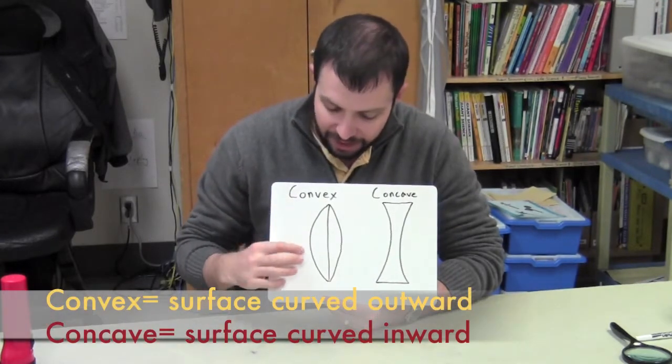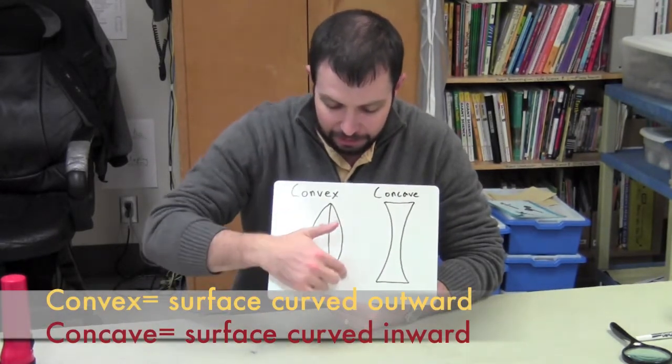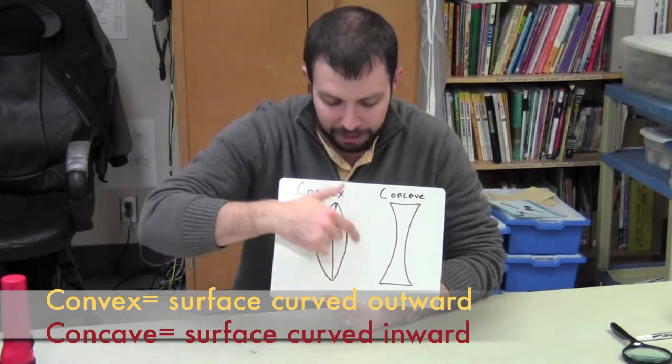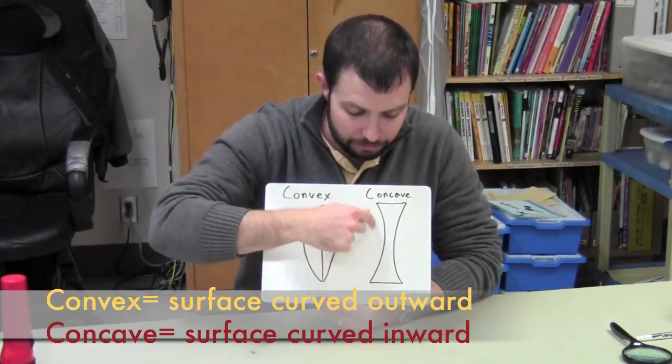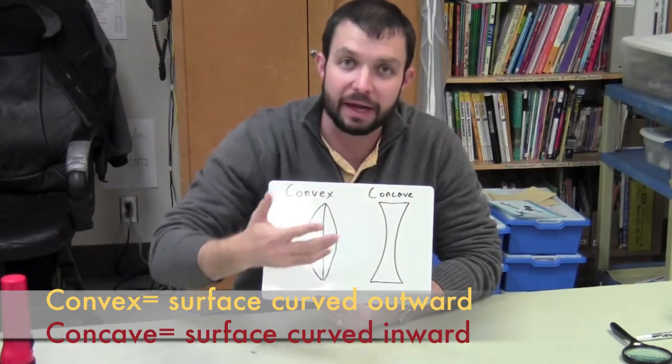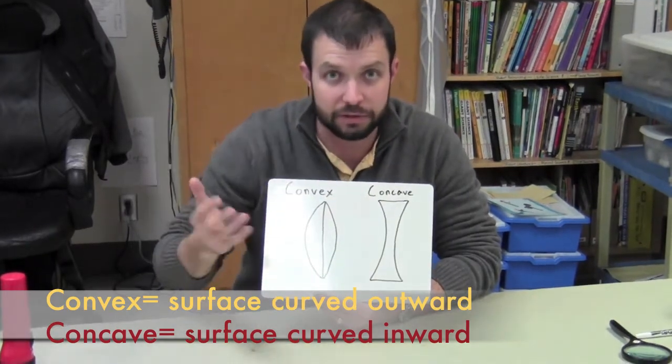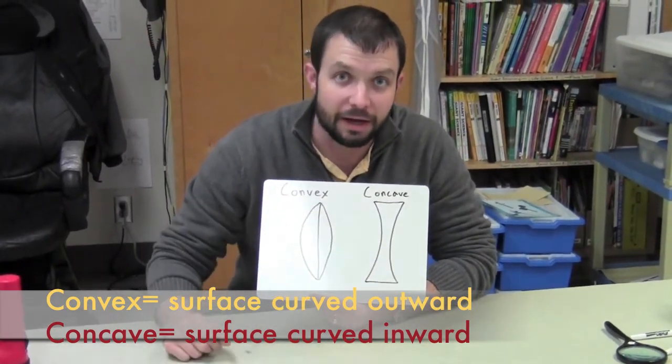Material that is convex is shaped like this, it bulges out almost like a bubble. Material that's concave curves inward. Think about a cave, how a cave is carved into the rock. Don't forget, convex and concave.